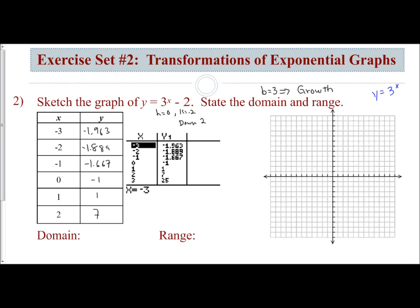We're just going to plot those points. At 0, I'm at negative 1. At 2, well, at 1, I'm at 1. At 2, I'm at 7. At negative 1, I'm at negative 1.667. At negative 2, I'm at negative 1.8. And then I'm at negative 1.9. So what I see here when I'm graphing is it looks like it's approaching negative 2.